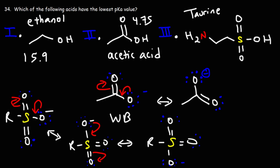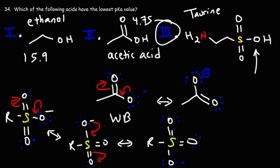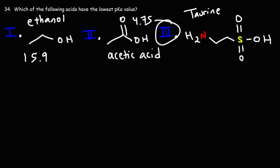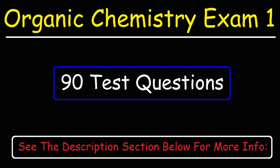So the answer is number three — taurine. The sulfonic acid in taurine has a lower pKa value than acetic acid or ethanol. The reason is the resonance stabilization of the conjugate base: the negative charge can be placed on three oxygen atoms as opposed to two or one. The more atoms across which you can spread that negative charge, the more stable the conjugate base, and the stronger the original acid, with a lower pKa value.